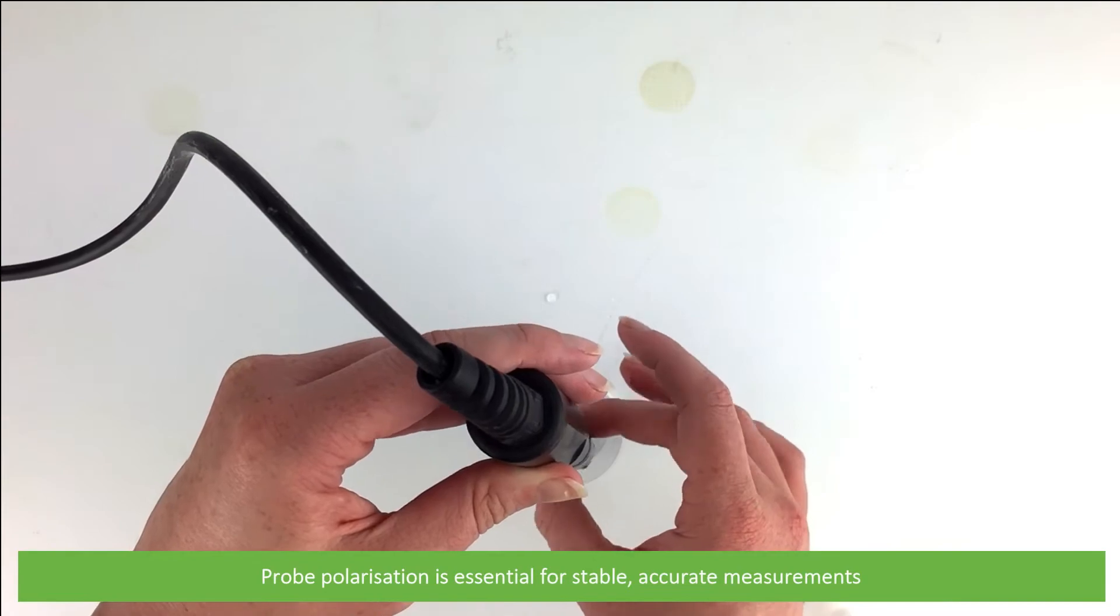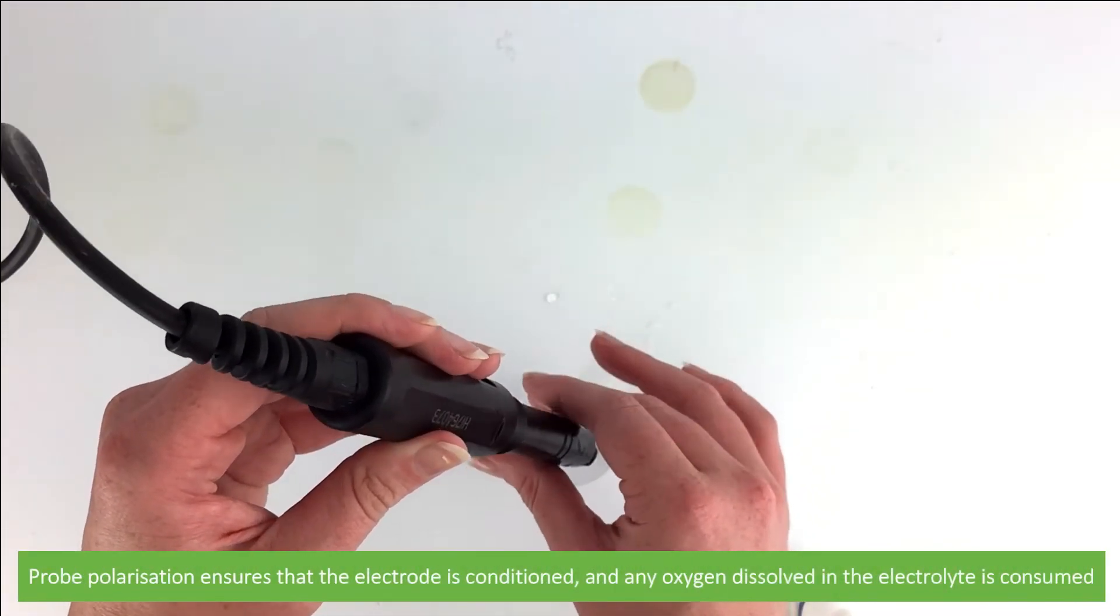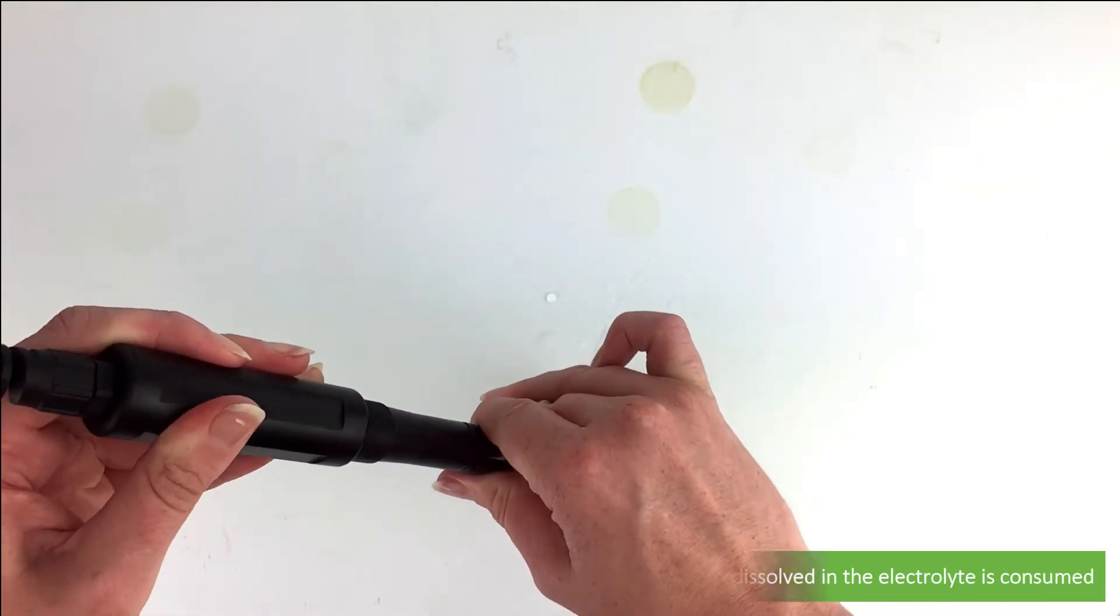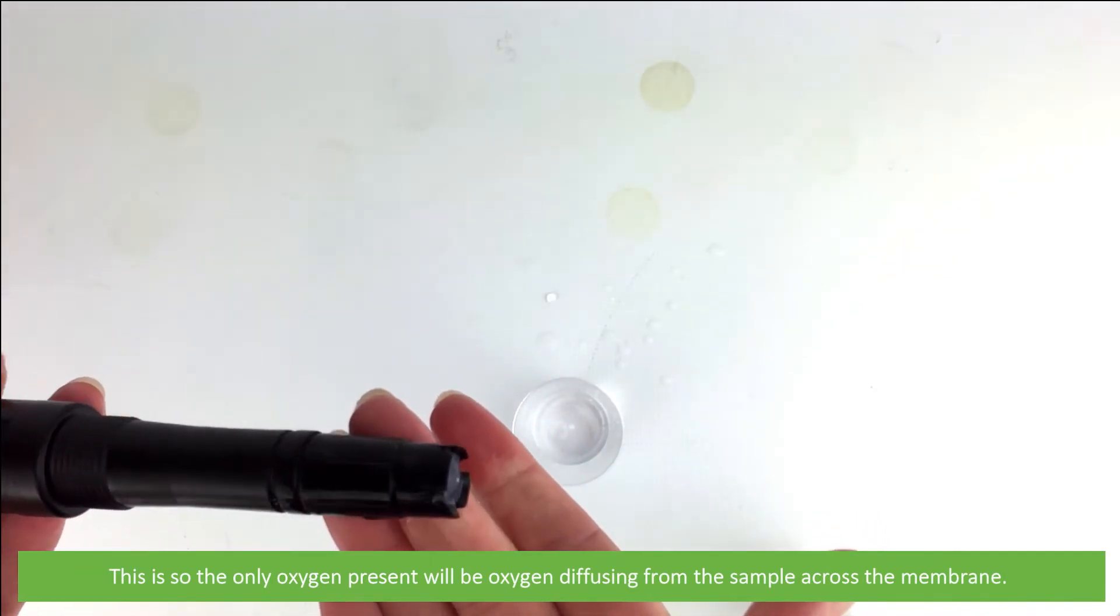Probe polarization is essential for stable, accurate measurements. Probe polarization ensures that the electrodes are conditioned and any oxygen dissolved in the electrolyte is consumed. This is so the only oxygen present will be the oxygen diffusing from the sample across the membrane.